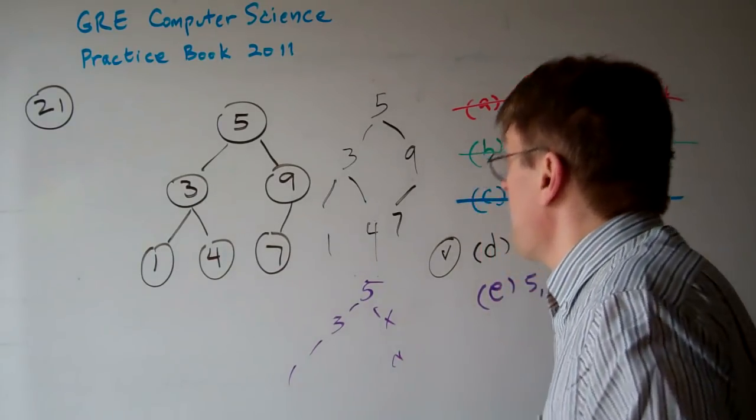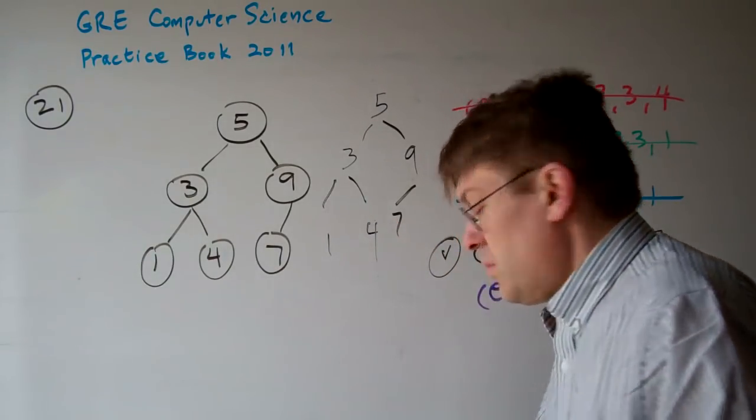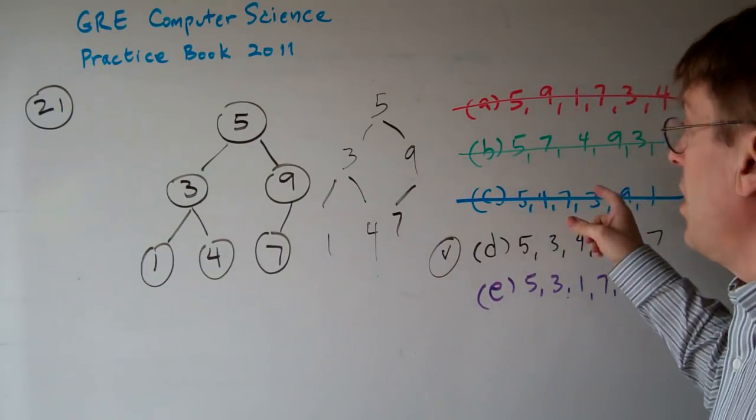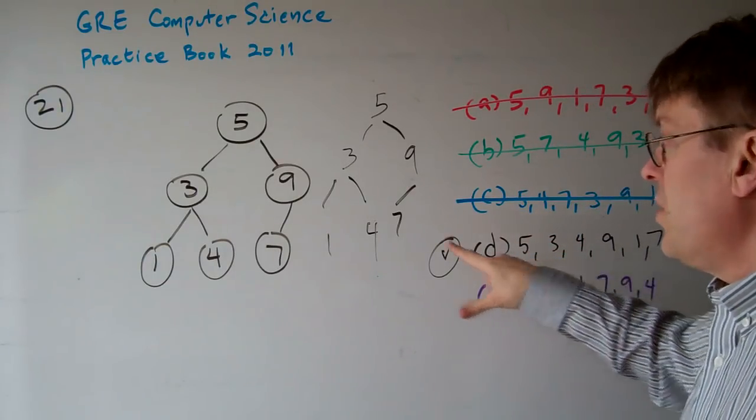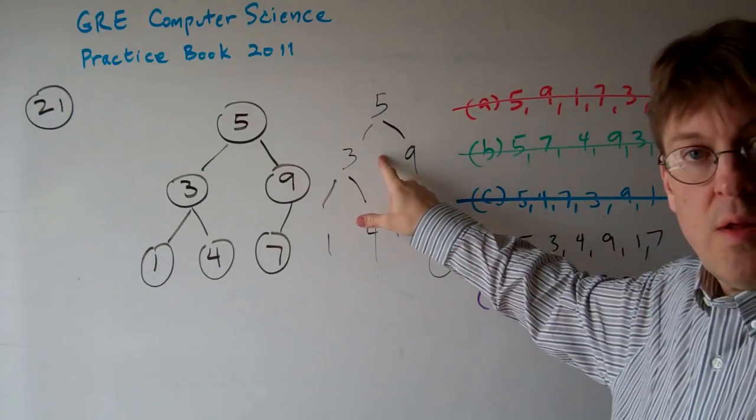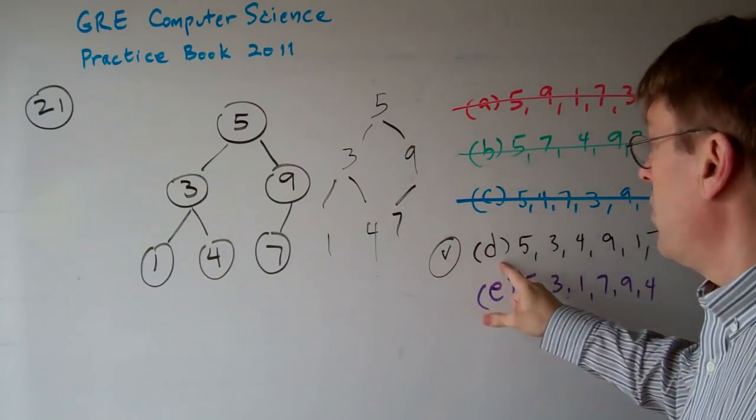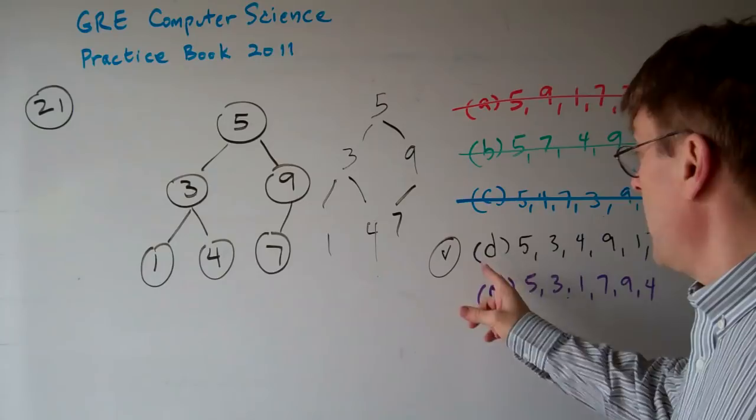the only one of these options that produces the binary search tree is this one. So the answer is D.